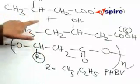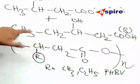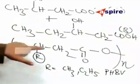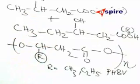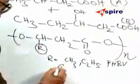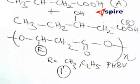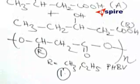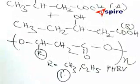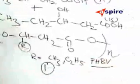You look at the structure and the choices we have, it is corresponding to choice one, that is polyhydroxybutyrate CO beta-hydroxyvalerate and that is the expansion for PHBV.